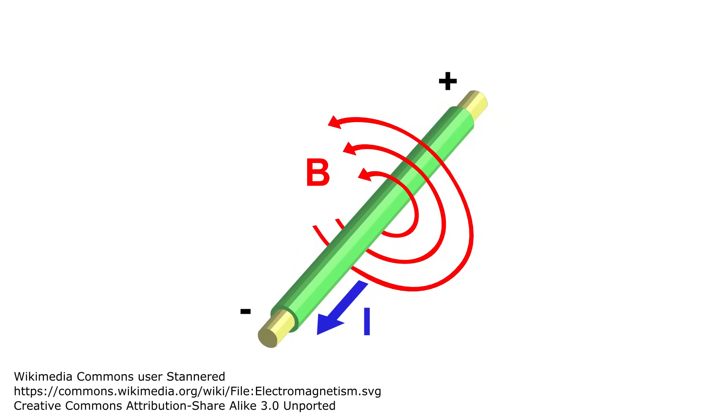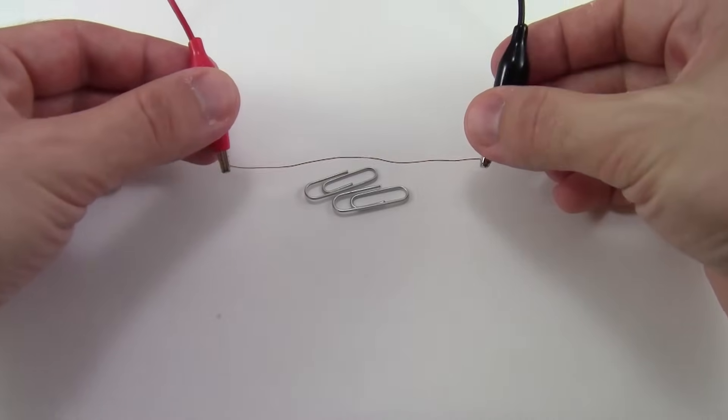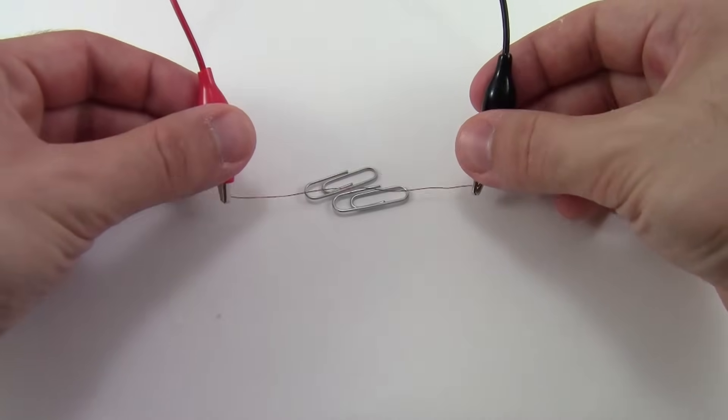This magnetic field takes a circular shape around the wire like this. However, the magnetic field around a single straight wire is very weak, not enough to pick up even one of these paper clips.